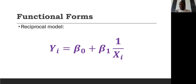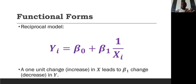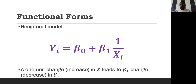With the reciprocal model, we take the reciprocal of the independent variable. If there is a one-unit increase in X, there will be a beta 1 unit decrease in Y. If the coefficient is positive but X is in reciprocal form, an increase in X actually leads to a decrease in Y — the opposite of what you'd expect without the reciprocal.